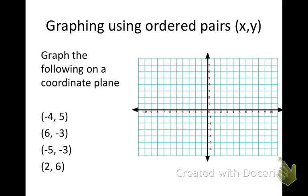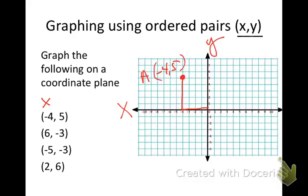We're going to do some practice now - graphing using ordered pairs. Ordered pairs are x and y. Copy this all down into your notebook. Because then you can listen to me after you have all of your notes written. I'm going to graph negative 4 and 5. The x always comes first, and x is horizontal. Y is vertical - y to the sky. So I want negative 4, I'm going to come over to negative 4, then go up to positive 5. I'll put my dot and label that negative 4 and 5, and give it the letter A.